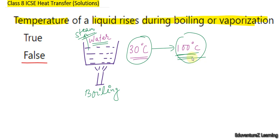If the whole water changes into steam, then the temperature may rise. But during the conversion process, the temperature remains constant. So temperature of liquid rises during boiling or vaporization is absolutely false.